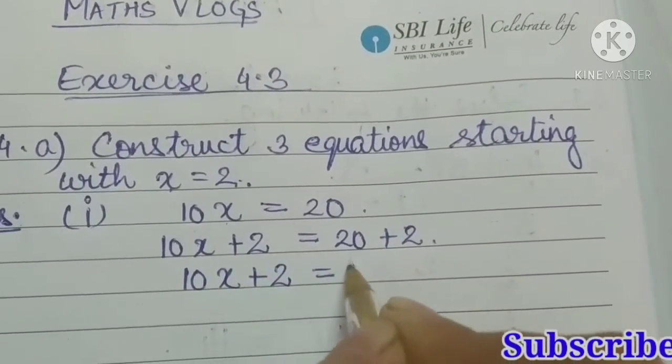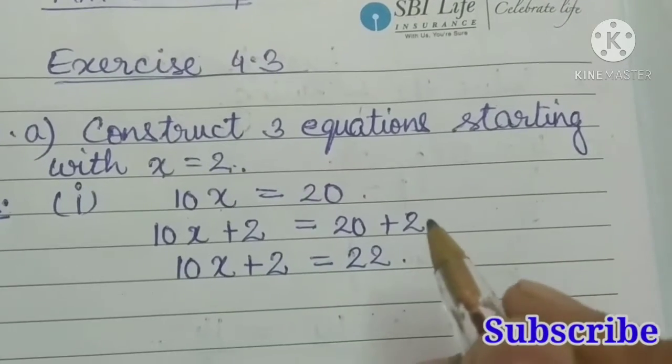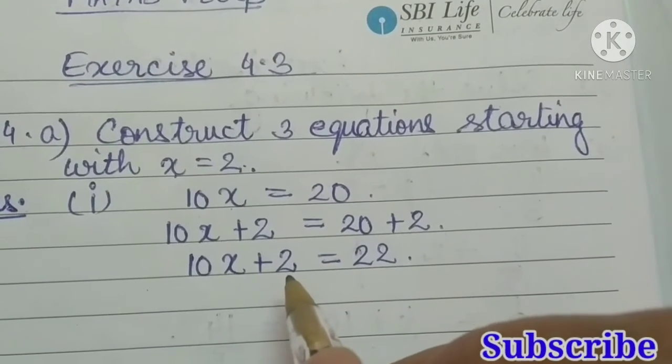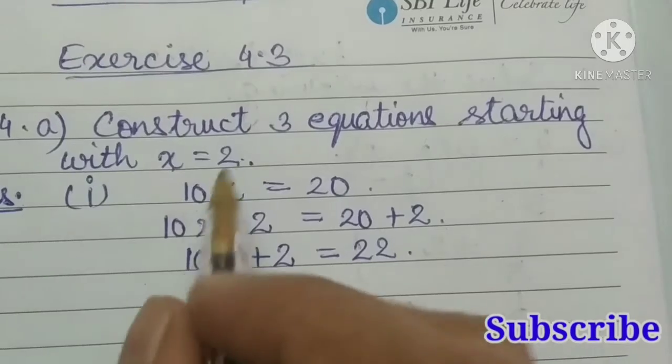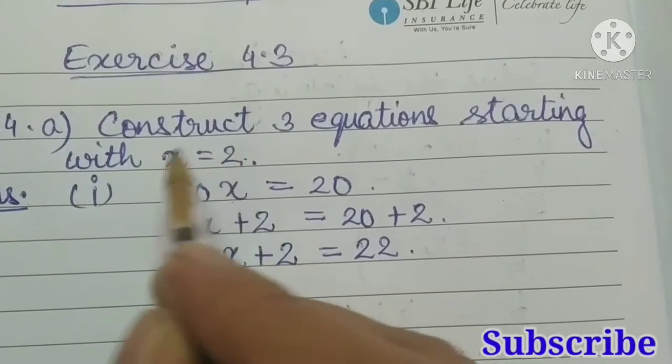So first equation is 10x plus 2 is equal to 22. So we found one equation. Now next, let us multiply 2 on both sides.